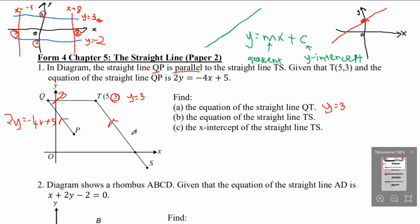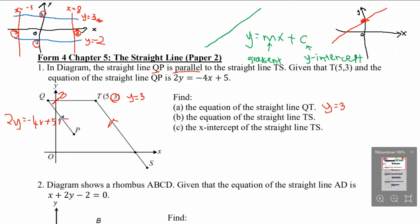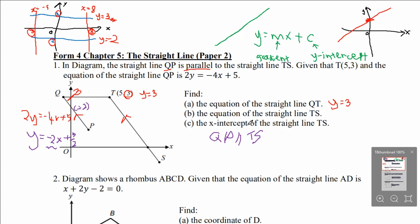Find the equation of the straight line TS. We rearrange the equation for QP. Dividing by 2, we get Y equals to negative 4 over 2 X plus 5 over 2, which is Y equals to negative 2X plus 5/2. Comparing to the general equation Y equals to MX plus C, the gradient of QP is negative 2. Since QP is parallel to TS, their gradients are equal, so the gradient of TS also equals to negative 2.